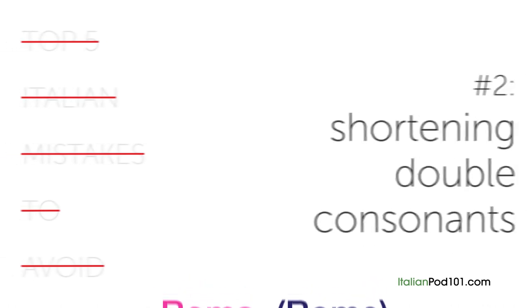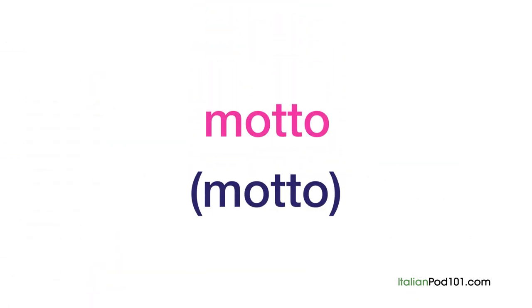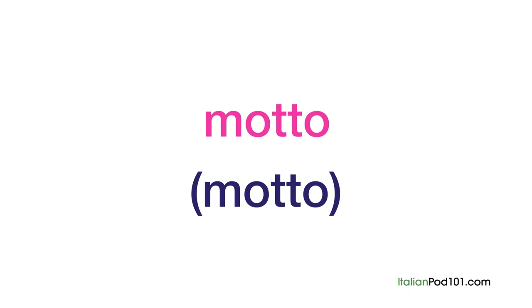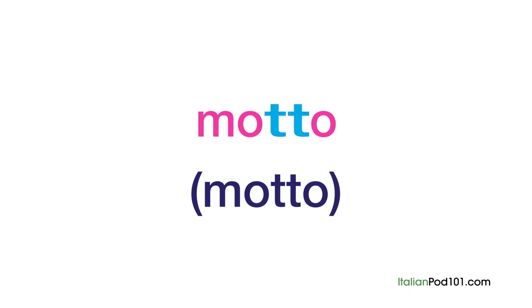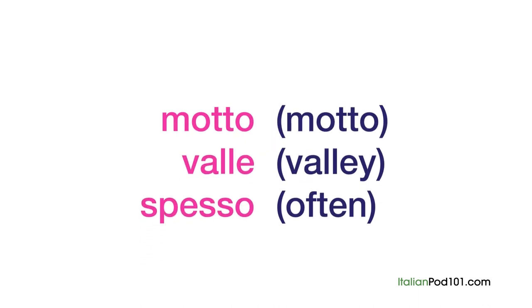Number two: shortening double consonant sounds. This is a common mistake because many students aren't aware that double consonants are actually pronounced for a longer duration in Italian than in English. To solve this problem, try to lengthen the sound a little bit longer than you would in English. Pay attention to the duration that the double consonant sound is held for and try to imitate it.